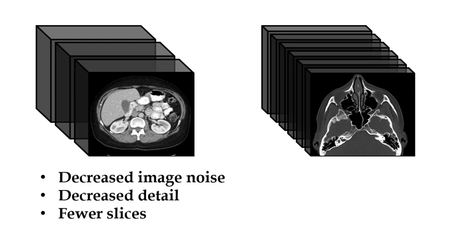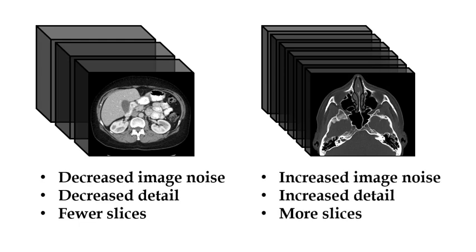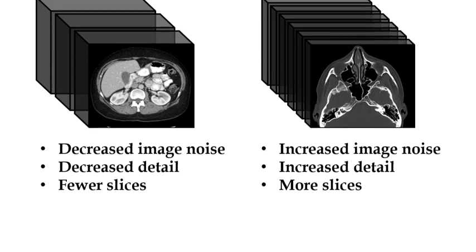There are some times when we definitely want to reconstruct images with thinner slices. Smaller parts such as blood vessels and bones should be imaged with thinner slices. This results in increased image noise, but the good thing is it also gives us increased detail — that's the same as spatial resolution — and more slices, which gives us more information.